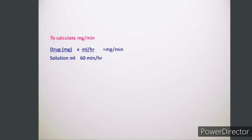Now, if the doctor has already mentioned the medicine to be administered at a particular rate in the file, and asks us to label the medicine in mg per minute — to know how much the patient is infusing — we can use this formula: drug in mg (dissolved) multiplied by the rate set by the doctor, divided by the solution in ml multiplied by 60. This gives the answer in mg per minute.